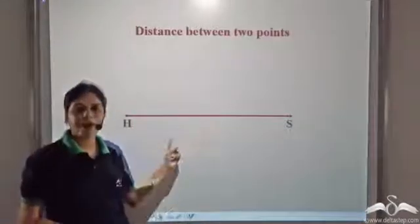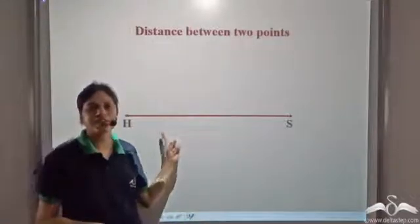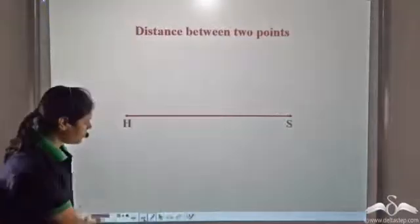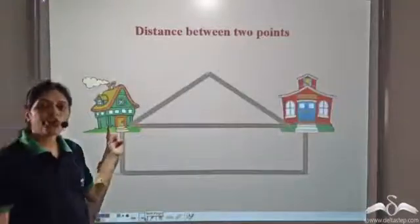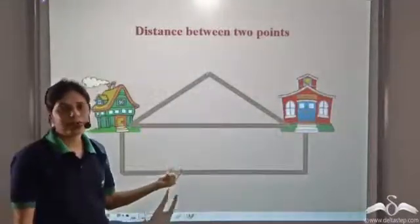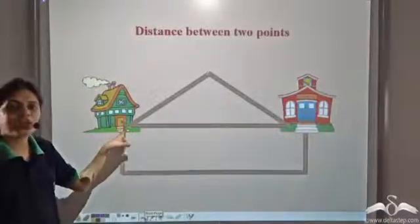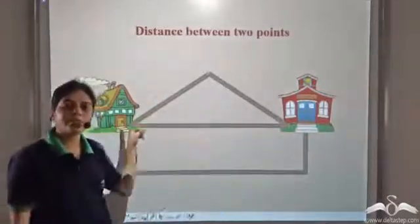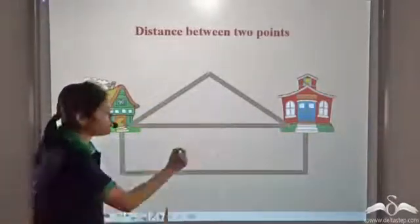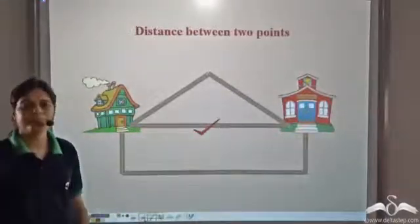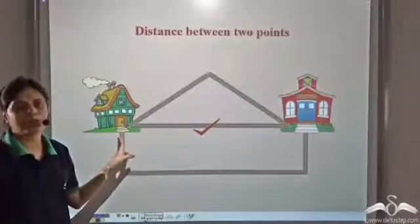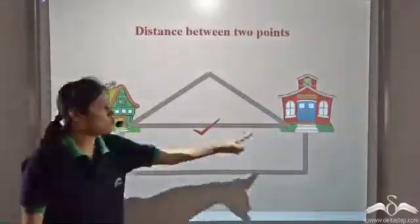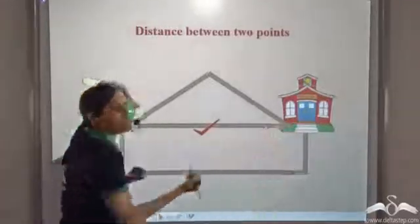So the length of the shortest path between two points is given by the line segment joining these two points. Now can you tell me which route should you take? The straight line joining your home to your school gives the shortest path from your home to school, so you should take this route. This is the shortest path from home to school, and the distance between your home and school is given by the length of this path.